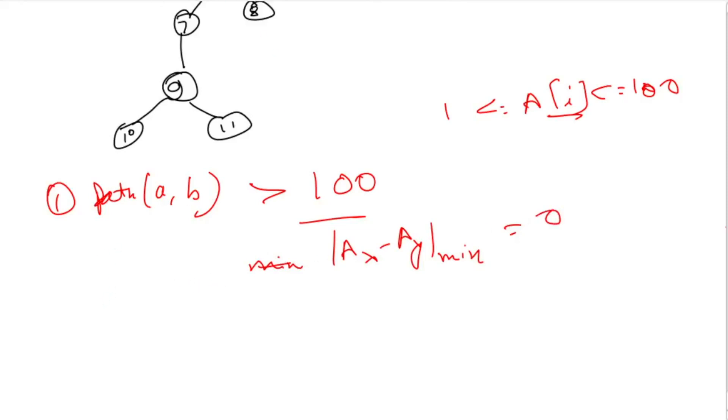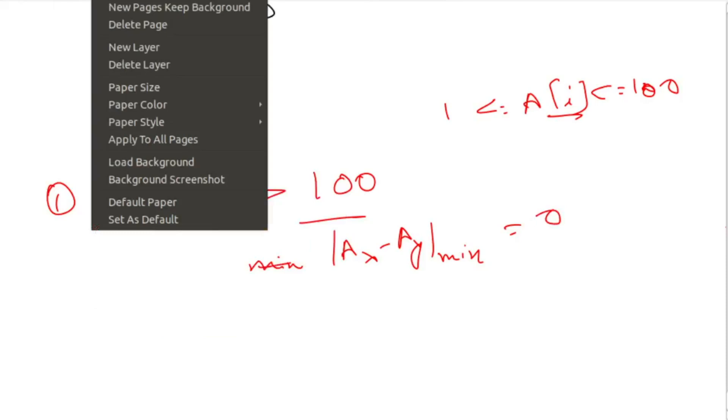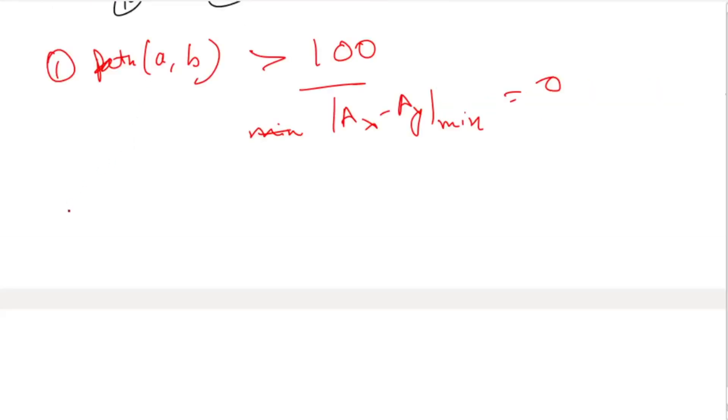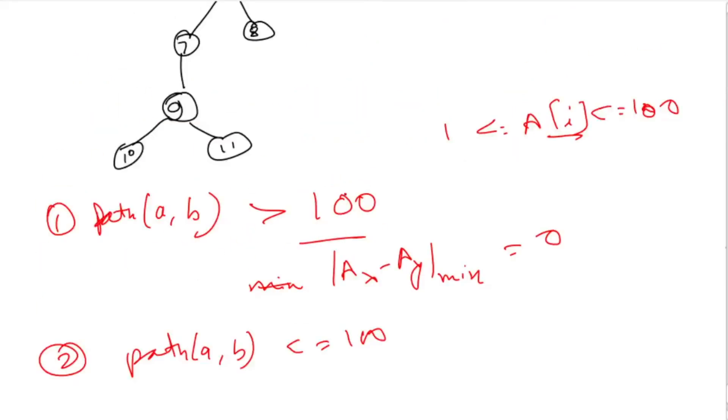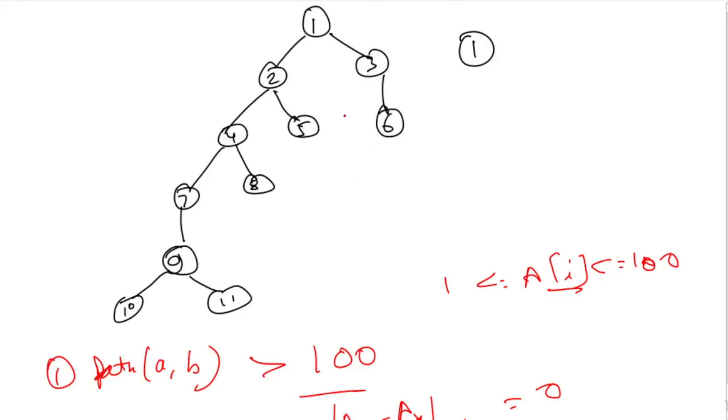The second case is when path length from a to b is less than or equal to 100. First of all, we have to construct a level array or height array, which tells on which level each node is. We can do this directly using DFS.